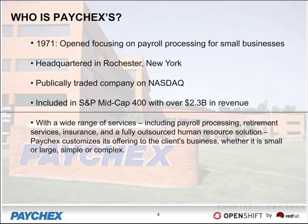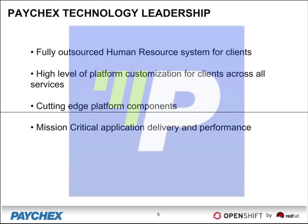Paychex was founded in 1971, originally focusing on payroll processing for small businesses. We're headquartered in Rochester, New York and are a publicly traded company on NASDAQ, included in the S&P mid-cap 400 with over $2.3 billion in revenue. We offer a wide range of services, including payroll processing, retirement services, insurance, and fully outsourced human resource solutions. Paychex customizes the offering to the client's businesses, whether small or large, simple or complex. We offer fully outsourced human resource systems with a high level of platform customization for clients across all services, cutting-edge platform components, and mission-critical application delivery and performance.